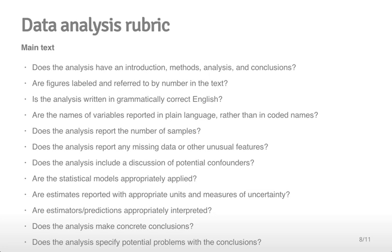Does the analysis report any missing data or other unusual features? Does the analysis include a discussion of potential confounders? Are the statistical models appropriately applied? Are estimates reported with appropriate units and measures of uncertainty? Are estimators or predictions appropriately interpreted? Does the analysis make concrete conclusions? And does the analysis specify potential problems with the conclusions? If you don't understand what some of these mean, don't worry about it. We'll be talking about them during the course of the class, and they'll make more sense when it comes time to review the assignments of your peers.